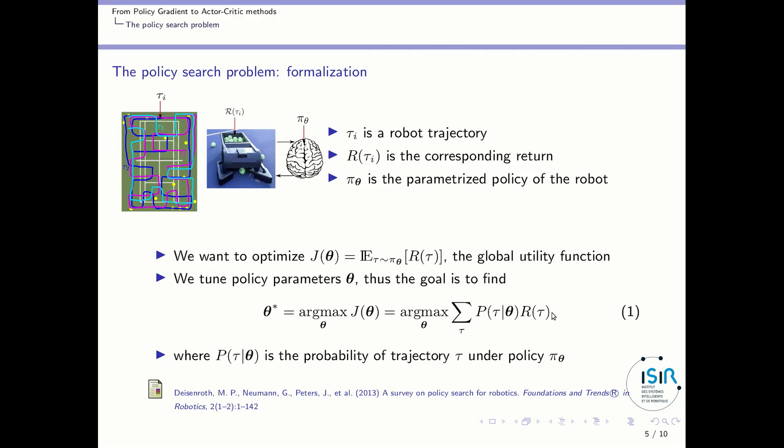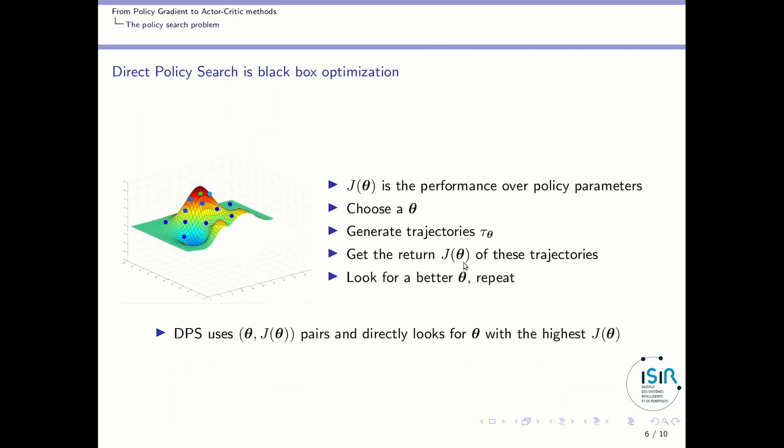So a first approach to solve this optimization problem is called direct policy search and it is a black box optimization problem. What does it mean? It means that if J(θ) is the performance of our policy parameters, the way to optimize θ is as follows. We choose a particular θ, we generate a set of trajectories τ_θ, we get the return J(θ) corresponding to these trajectories, we look for a better θ and again and again.